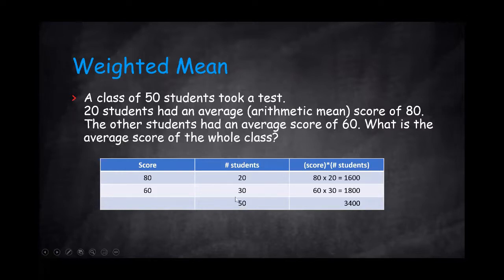Together we have 50 students. If we multiply the score by the number of students and we add up, we'll get 3400. Divide that by the weight, the total weight of 50, and you'll get 68.